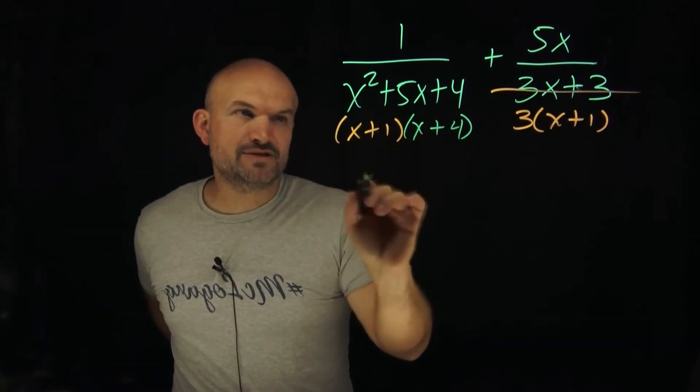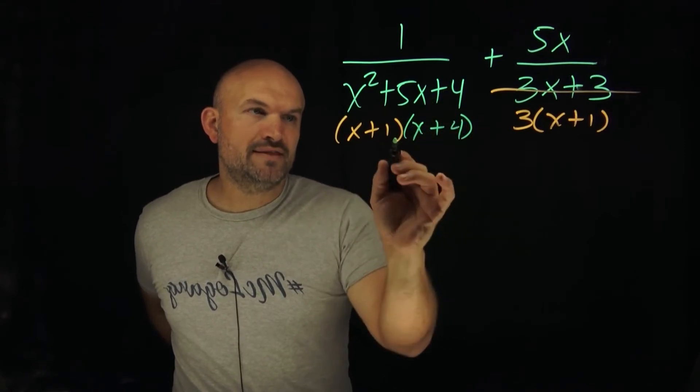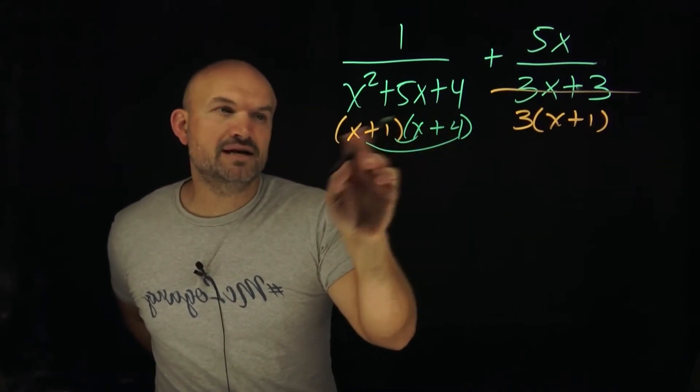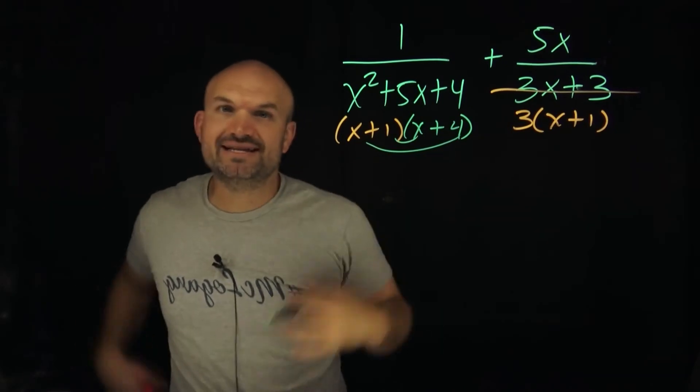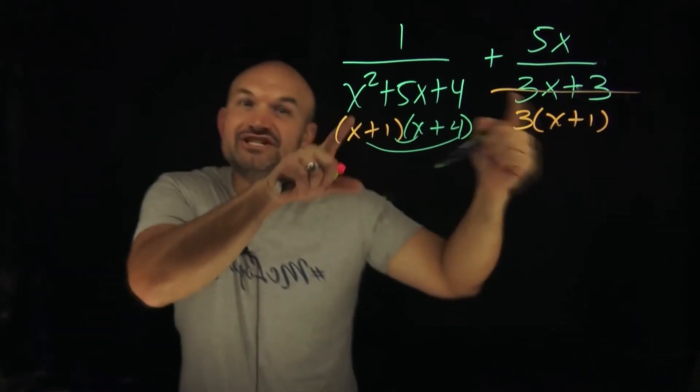If I multiply x times x is x², one times four is four. And then these two better add to give me 5x. x times one is 1x, x times four is 4x. 4x plus 1x is 5x. So you can see that they share this common factor.